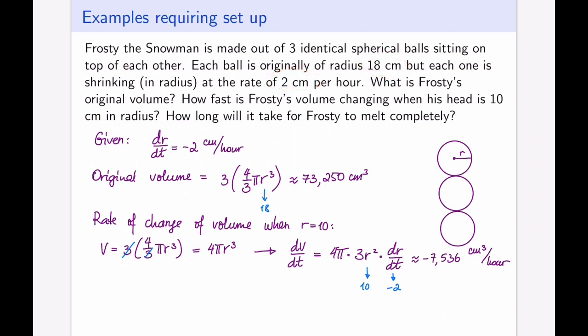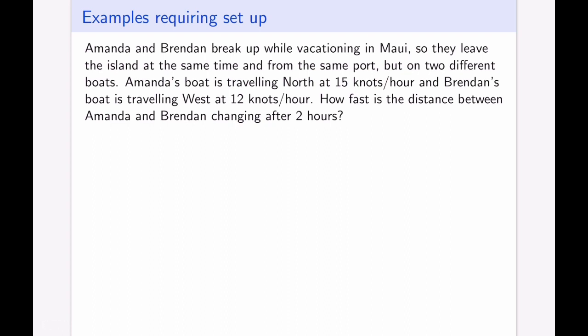For this last question, the setup is left to you. Amanda and Brendan are leaving an island at the same time: Amanda's boat travels north, Brendan's travels west. The question asks how fast the distance between them is changing. You have a triangle — recall the spider question from the previous lecture and the Elvis question from this one for inspiration about what formulas apply to right-angled triangles.